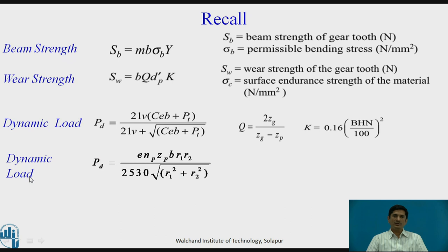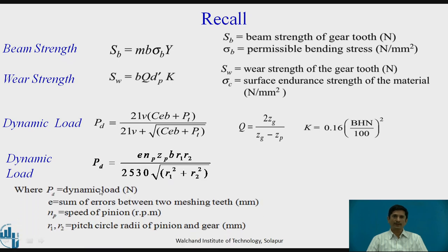Dynamic load is also given by the Spot's equation Pd equals E Np Zp B R1 R2 divided by 2530 square root of R1 square plus R2 square. Where Pd is the dynamic load, E is again the sum of errors between two meshing teeth. Np is the speed of pinion in RPM. R1 and R2 are the pitch circle radii of the pinion and gear respectively.